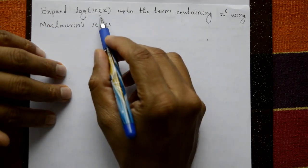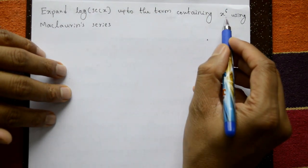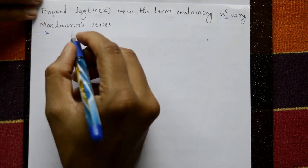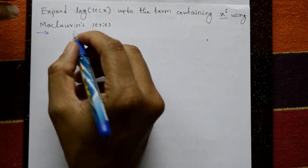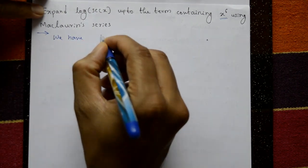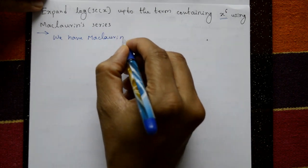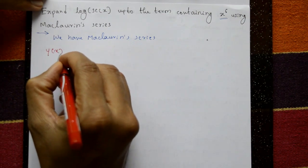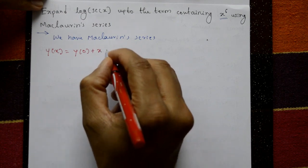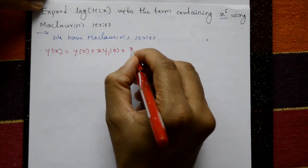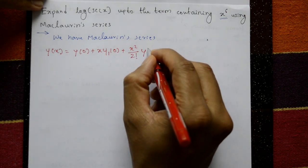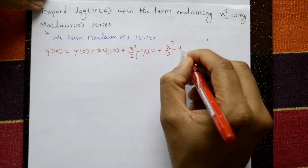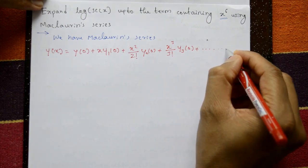Expand log of secant x up to the term containing x raised to 6 using Maclaurin series. The Maclaurin series is: y(x) = y(0) + x·y1(0) + x²/2! · y2(0) + x³/3! · y3(0) + ... and so on for the expansion of the series.